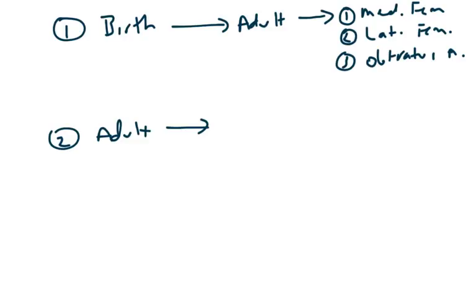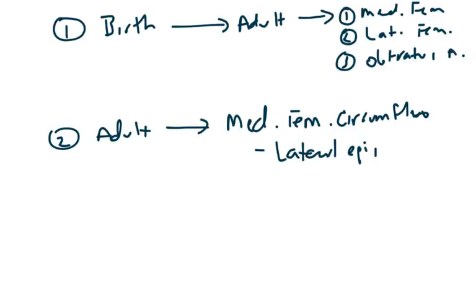As you progress to an adult 18 years and beyond, it's mainly going to be from your medial femoral circumflex. Specifically, it's going to be a branch known as your lateral epiphyseal artery.